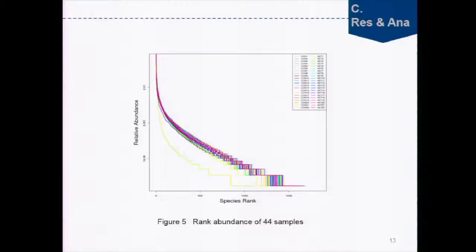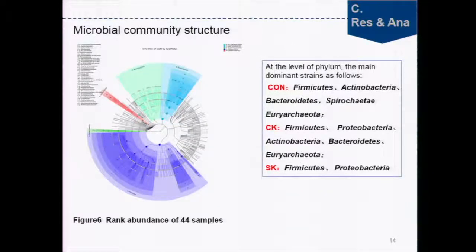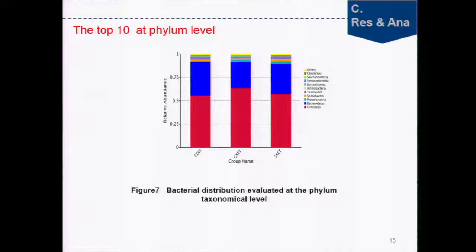This is the rank abundance curve of all 44 samples. At the phylum level, the main dominant phyla are shown for CON, CK, and SK groups. The top 10 phyla at phylum level show that Firmicutes and Bacteroidetes account for more than 18%. The relative abundance of each phylum was different between groups.